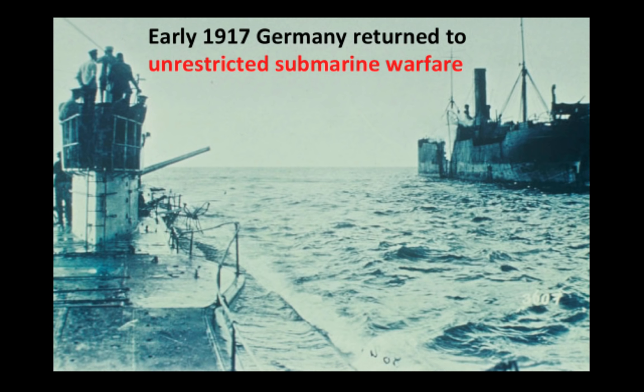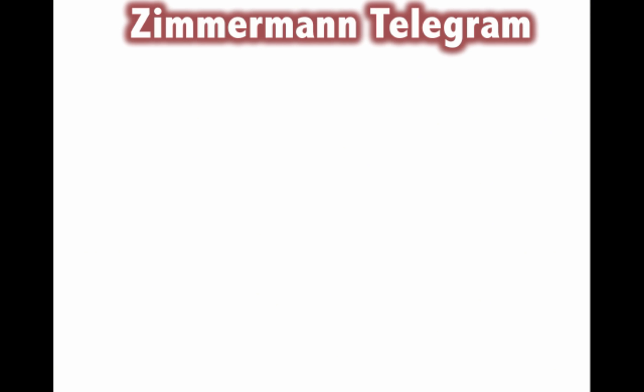In early 1917, Germany returned to unrestricted submarine warfare, planning to sink all ships. They knew this would likely bring the US into the war, but they believed they could win the war in Europe before America actually entered. Their main goal was to cut off supplies to France and England. Right after Germany resumed unrestricted submarine warfare, Wilson broke off diplomatic relations with the German government.